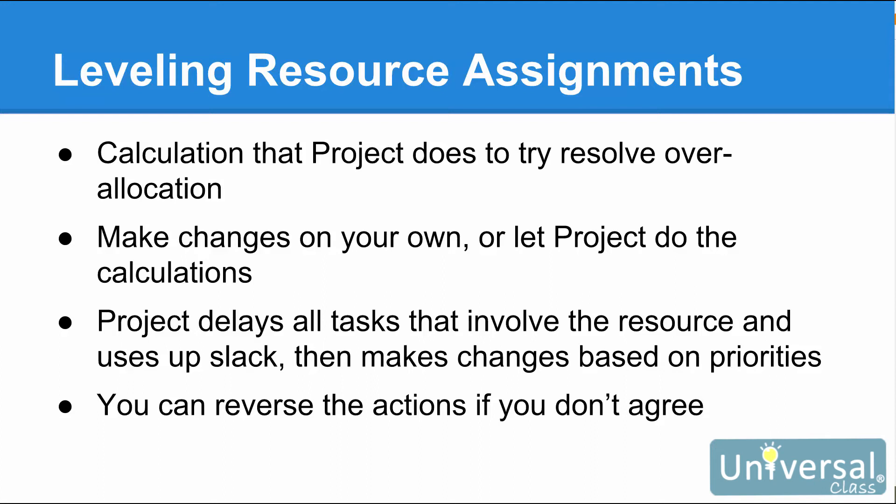Resource leveling is actually a calculation that Project does to try and help you resolve over-allocation of your resources. When you level a resource, you can make changes on your own or let Project do all the calculations for you. If a resource is over-allocated, Project delays all tasks that involve over-allocated resources and uses up any available slack. When there is no more slack available, Project then makes changes based on priorities you've entered for tasks and dependencies, as well as task constraints such as Finish No Later Than. If you do not agree with the changes Project would make, you can reverse the actions.